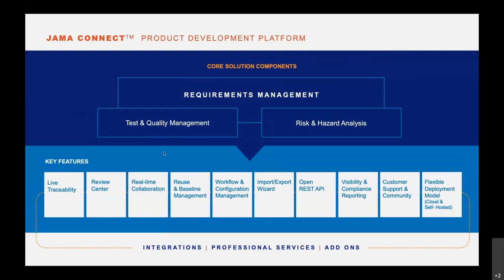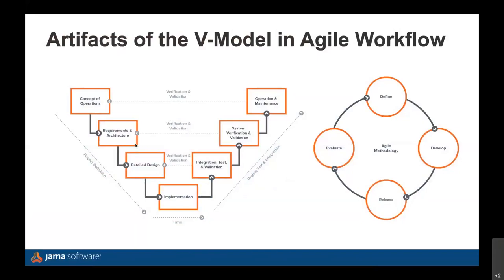Before the tour of the solution, let's look at the problem with product development today. In product development you typically follow the V-model if you are dealing with functional safety-critical systems, and this has been practiced since the 1960s very successfully. There is just one problem: the V-model in systems engineering tends to be slow. By the time you have defined your concept of operations and gone all the way down to implementation, and then can do verification and validation activities at the top level, a lot of time has passed.